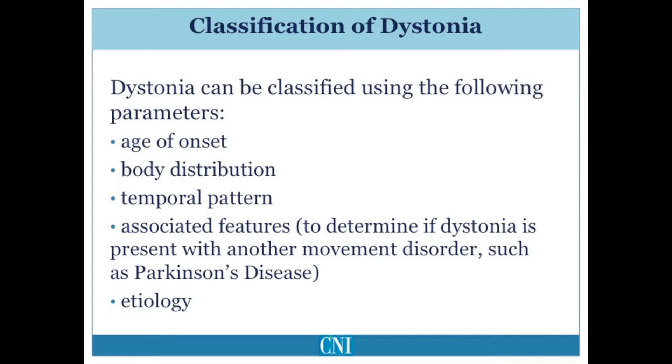Dystonia is then additionally classified by the underlying cause as being either due to an identified genetic mutation or an acquired condition.